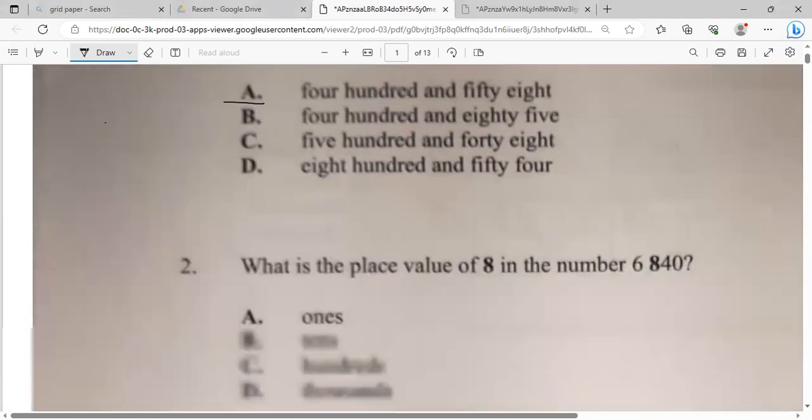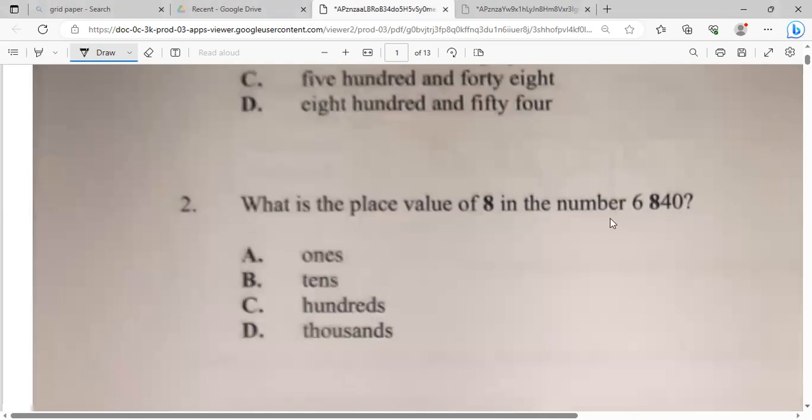What is the place value of eight in the number 6,840? So same as how you say it, right? So 6,840. So it's four tens and zero. So that's basically 800. So same as how you say number 6,800. That is the answer.